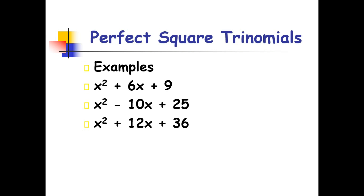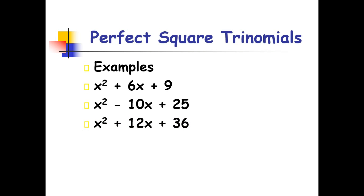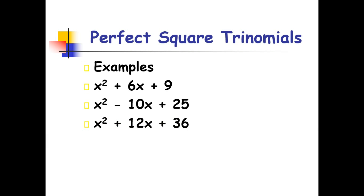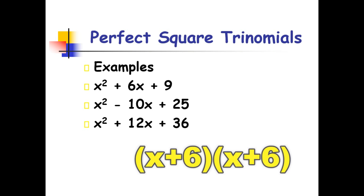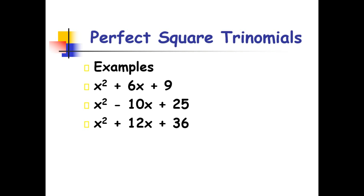It's very easy, math learners. These given examples, when factored, they have identical factors. So for x squared plus 6x plus 9, the factors are (x plus 3) squared. For x squared minus 10x plus 25, the factors are (x minus 5) times (x minus 5), or the quantity (x minus 5) squared. And finally, for x squared plus 12x plus 36, we have the factors (x plus 6) times (x plus 6), or the quantity (x plus 6) squared.